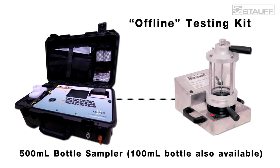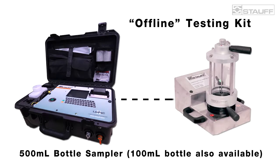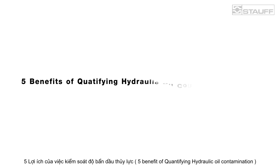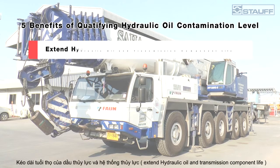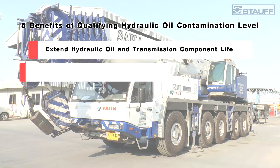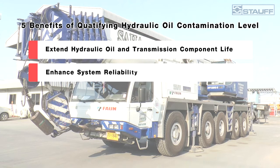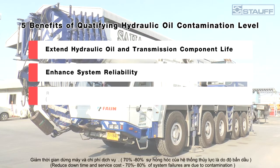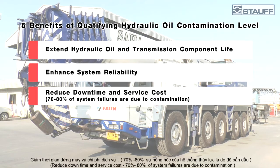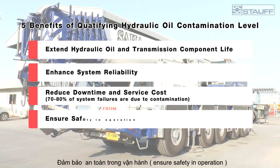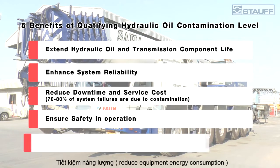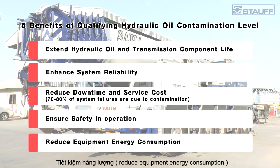Five benefits of measuring and quantifying the numbers of solid contamination in hydraulic oil: extend hydraulic oil and transmission component life, enhance system reliability, reduce downtime and service cost. Note that 70 to 80% of system failures are due to contamination. Additional benefits include ensuring safety in operation and reducing equipment energy consumption.